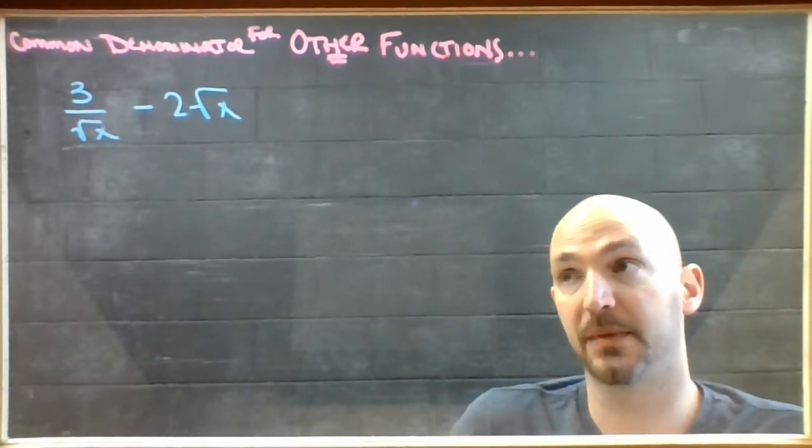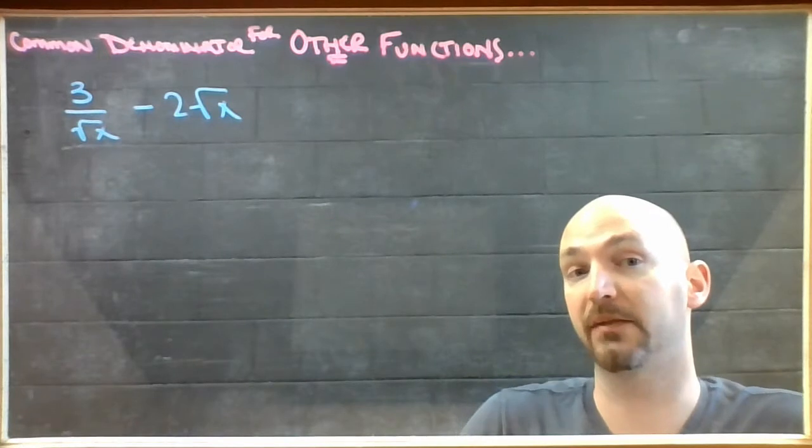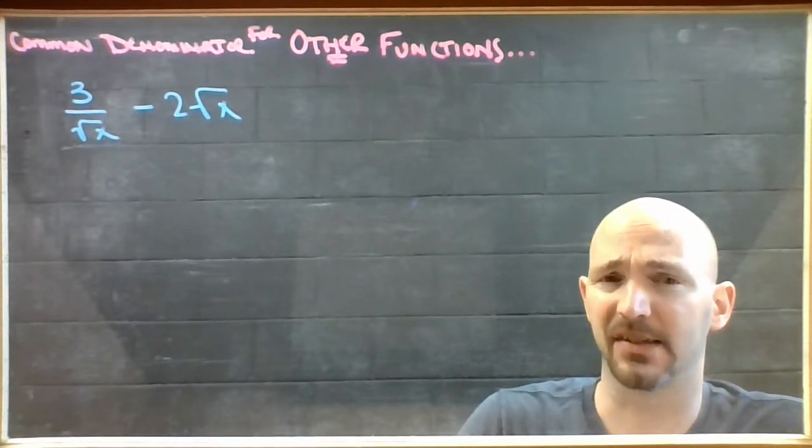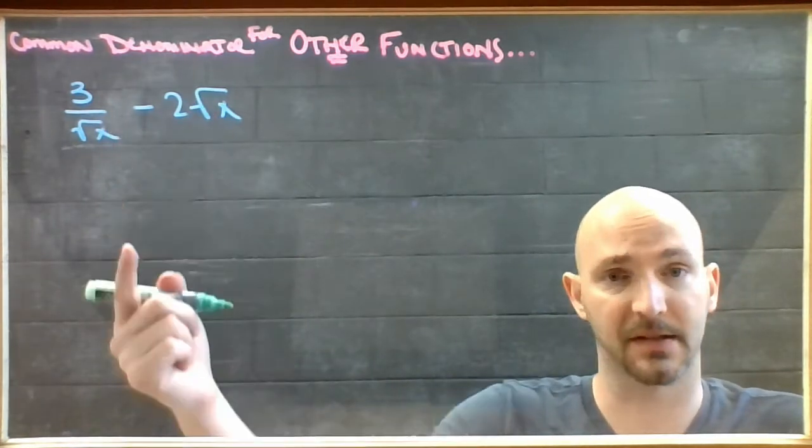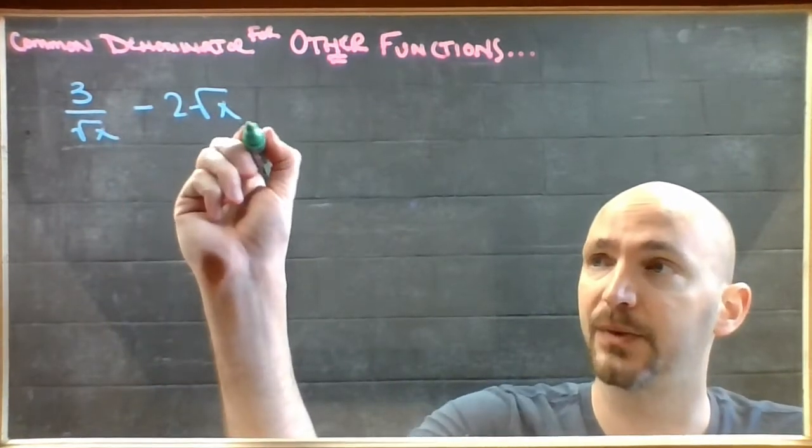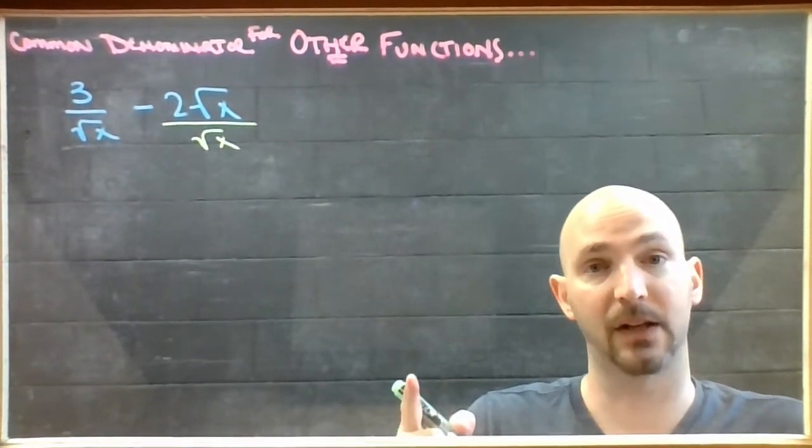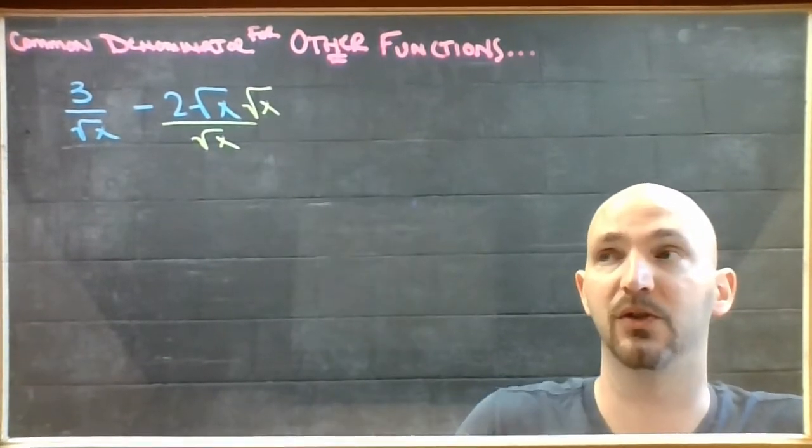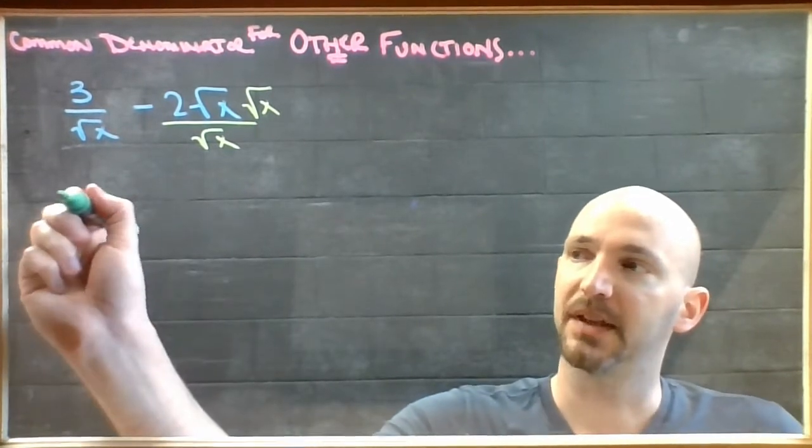So a second type of common denominator problem is where one thing has a denominator, and the other isn't even a fraction. But that doesn't stop you, the same as it didn't stop you with the trig functions. If I want to combine these two things as a single fraction, all I have to do is introduce a denominator to this second piece, and I can get away with that as long as I introduce a similar power in the numerator as well.